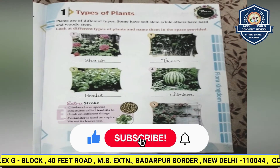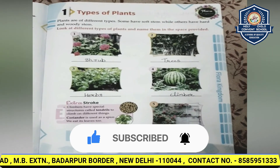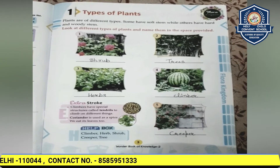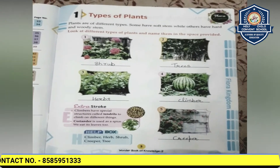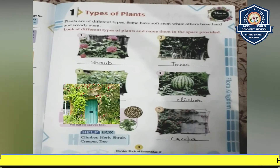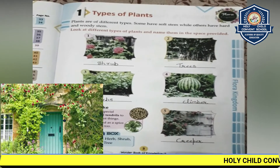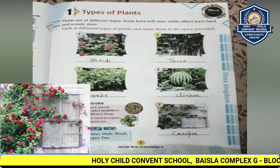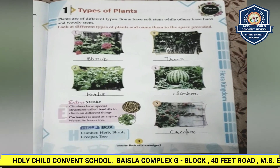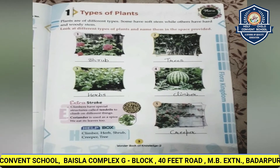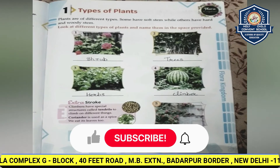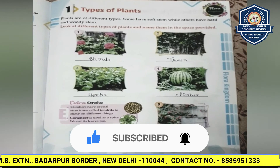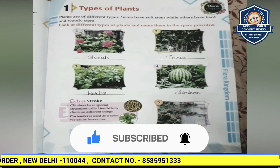Next we will study about climbers. Climbers are also a type of plant — basically they take the support of an object for climbing. Climbers are plants with weak stems; they cannot stand straight and need support to grow. They must climb on other plants, sticks, or walls to grow. Examples include pea, money plant, and beans.